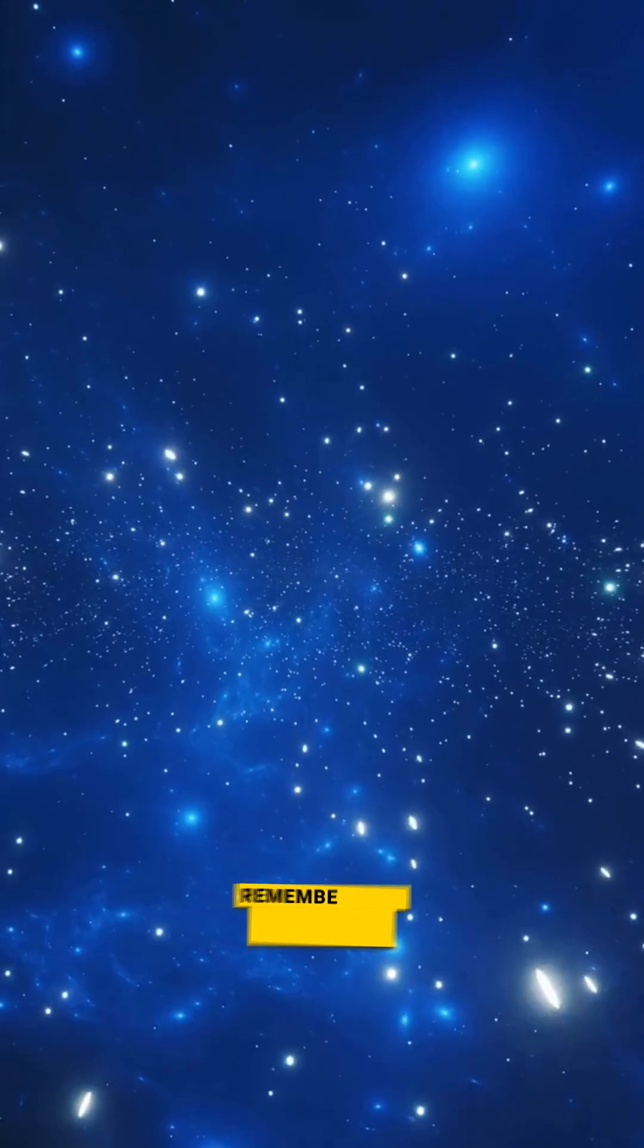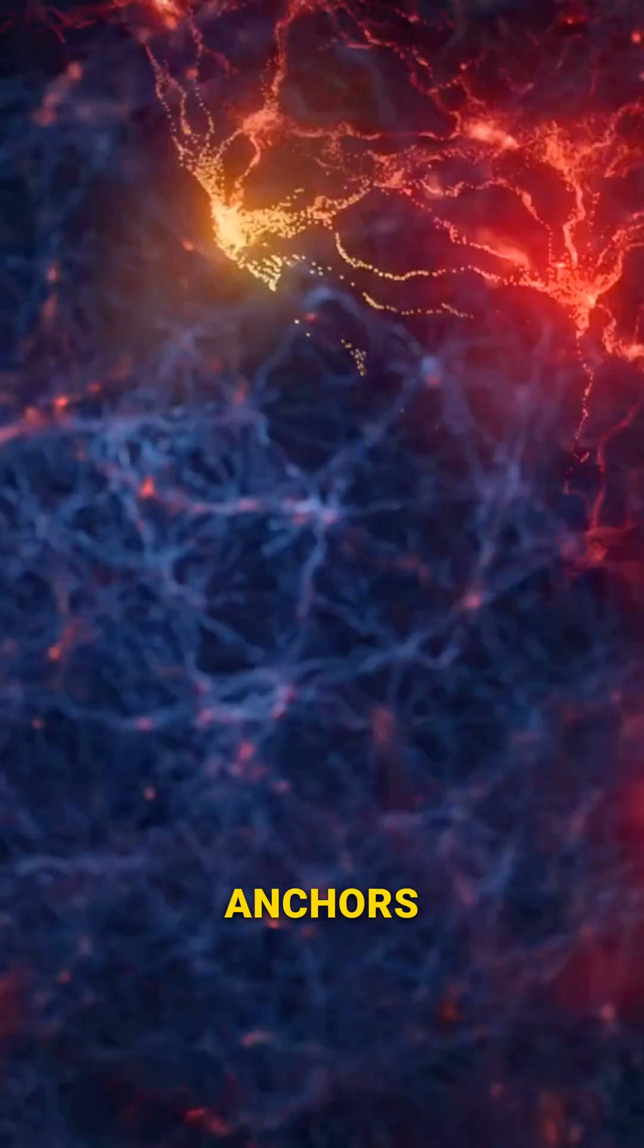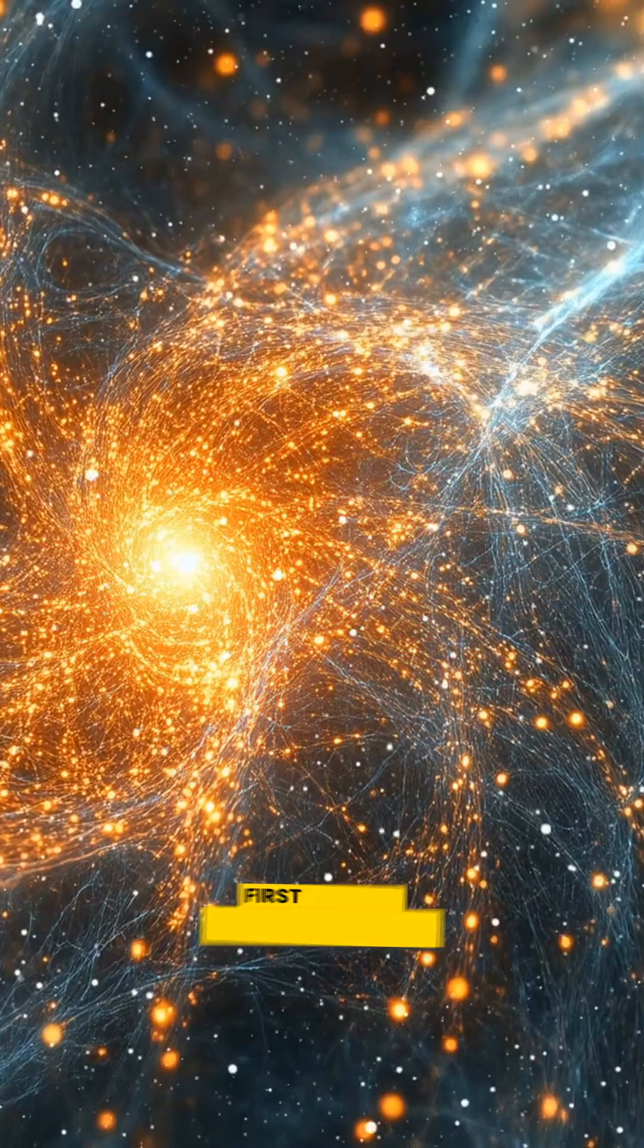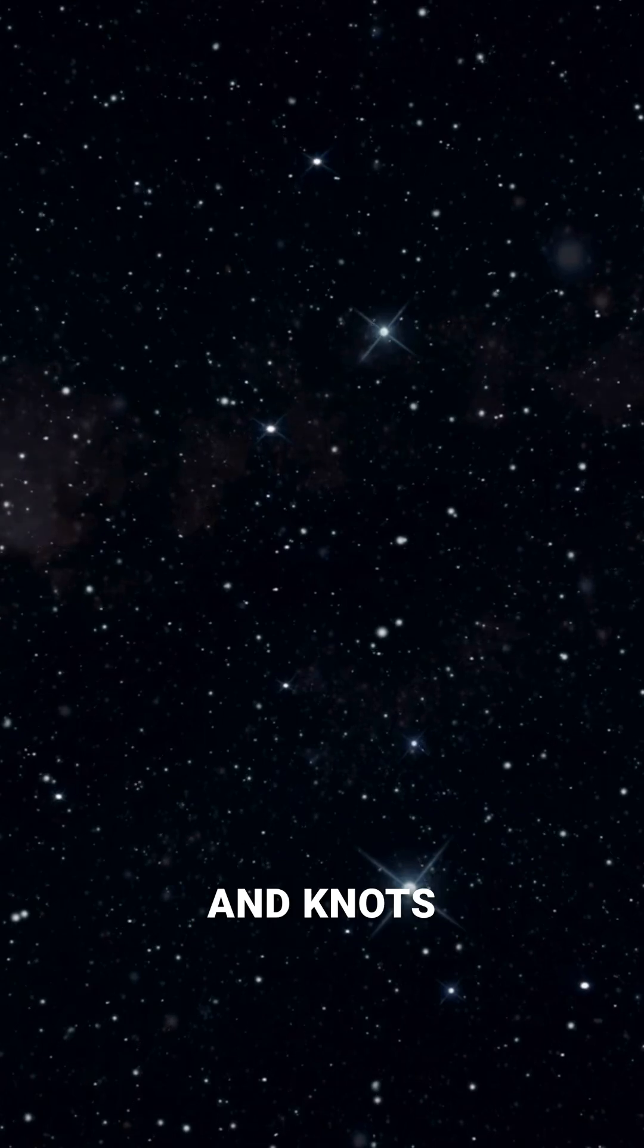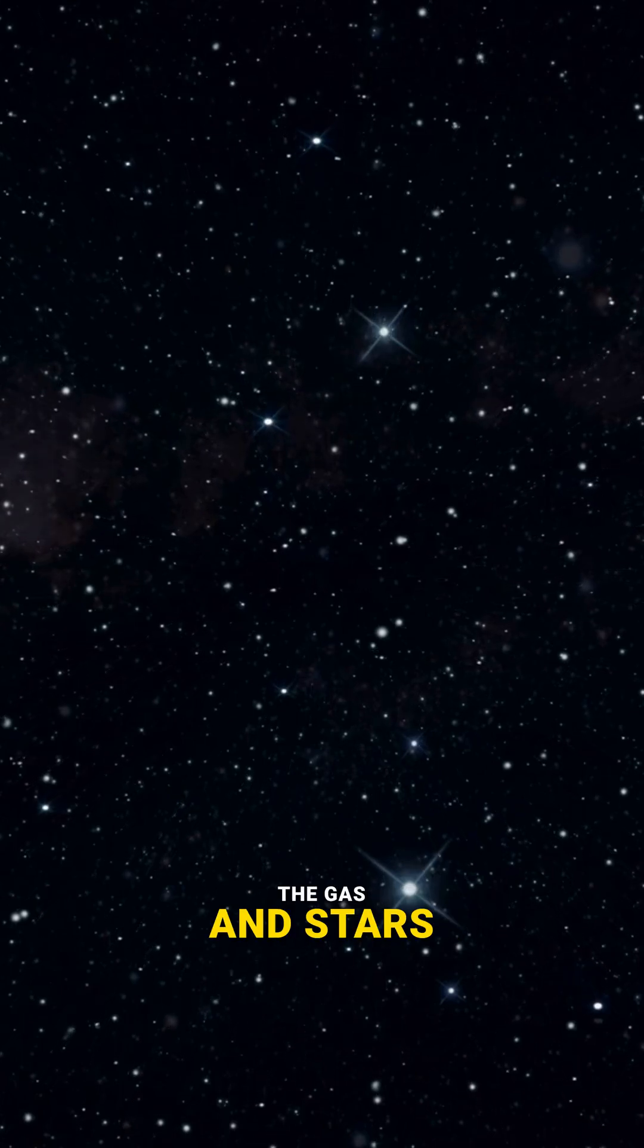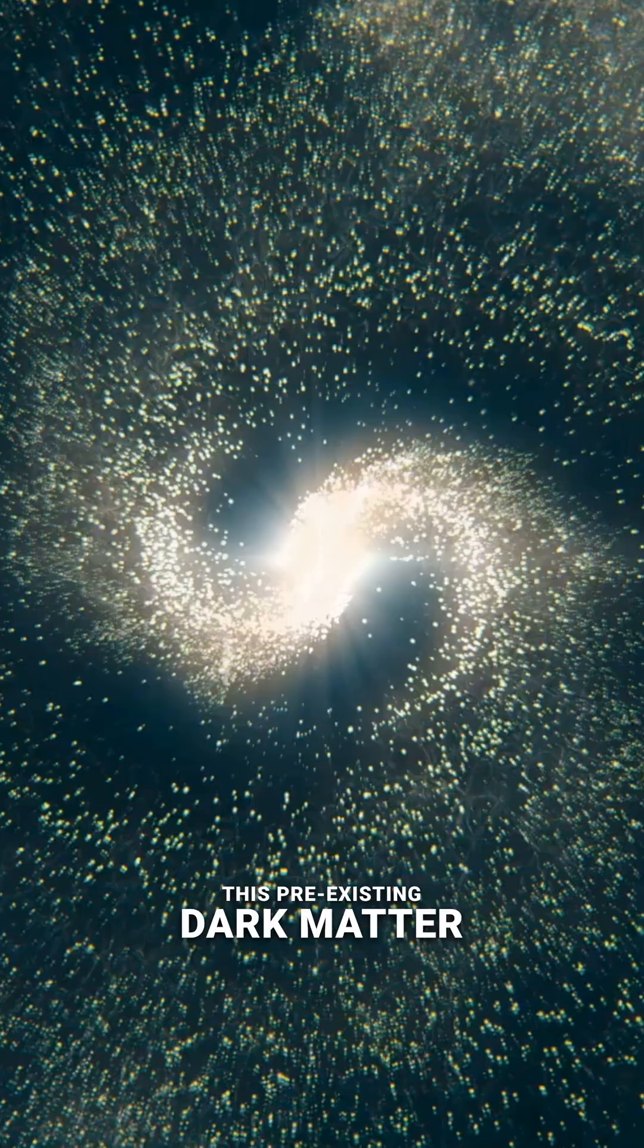Dark matter is literally the cosmic scaffolding. Remember how we said in the first galaxies video that structures needed anchors? Dark matter clumped together first, forming the invisible cosmic web of filaments and knots. The visible matter, the gas and stars, simply rained down onto this pre-existing dark matter structure.